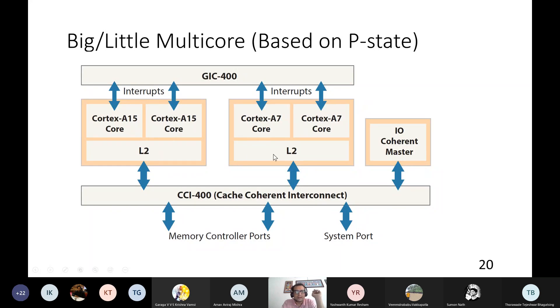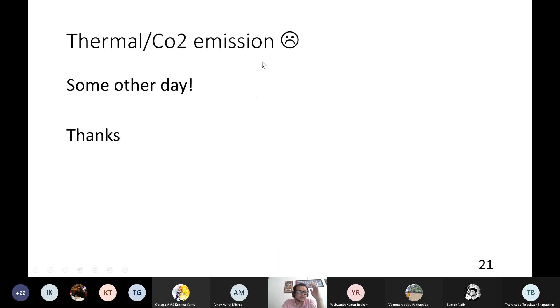So that's all actually I have. You can actually try to think about the connections from energy power into thermal issues and maybe the CO2 emission. Most of the companies, if you look at Microsoft, Facebook and all, they want to go green by 2030 or 2050 and power and energy is actually the first step. There are other steps which actually correlate with the final CO2 emission. So that I will stop. Any questions, anyone?